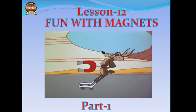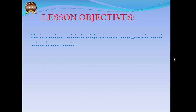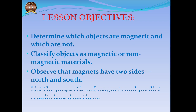In this lesson, we will determine which objects are magnetic and which are not. You will be able to classify objects as magnetic or non-magnetic materials. You'll also be able to observe that magnets have two sides — that is, the north and south — and their names.